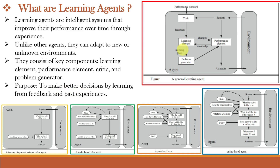Here in the block diagram of the learning agent, we can see different blocks like critic, learning element, performance element, and problem generator. These blocks are different from the traditional blocks of other agents like simple reflex, model based, goal based, or utility based agents, and this makes learning agents unique.